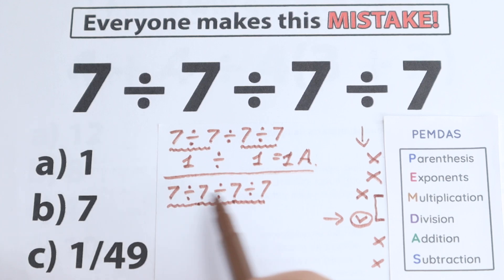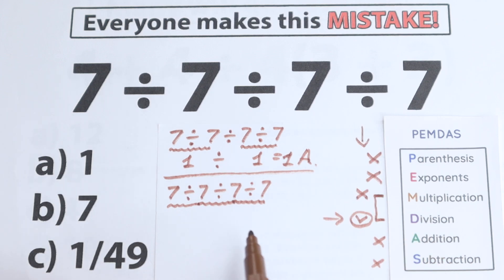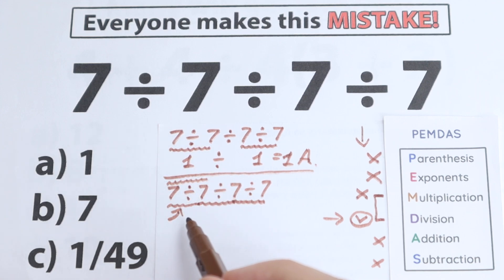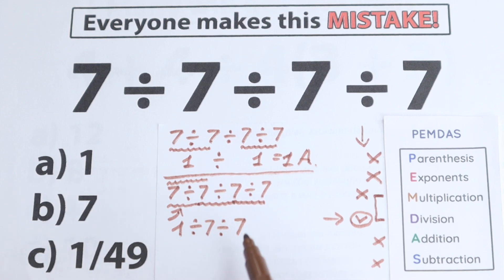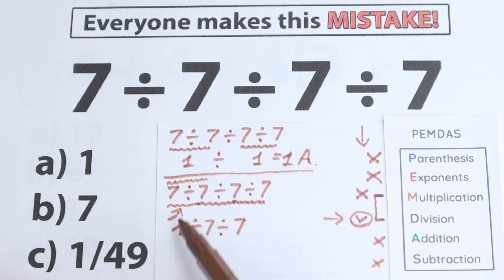Now let's solve it. We have division — but what is the correct order? According to PEMDAS it's left to right. We scan for the first sign from left to right: out of the three division signs, the first one is this division. So we divide 7 divided by 7 first, which equals 1. Now we have 1 divided by 7 divided by 7.